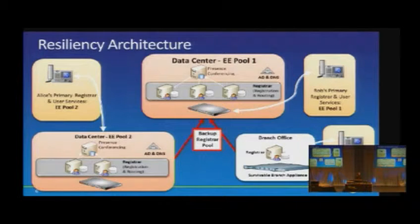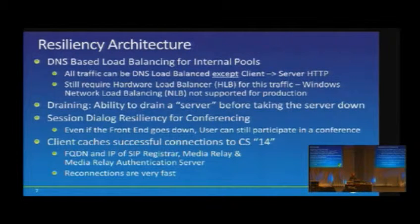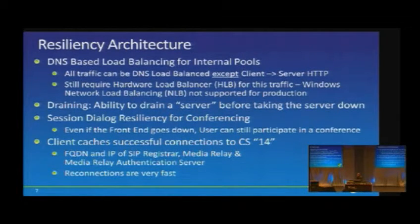We also have SBAs or branch offices with survivable branch appliances. Each SBA can be configured to have a backup pool — in this case pointing back to EE Pool 1. So Joe registers primarily at his branch location, but if his SBA goes down, Joe fails back to Enterprise Pool 1. This client-based load balancing applies to all SIP traffic, so SIP registration traffic no longer requires a hardware load balancer.